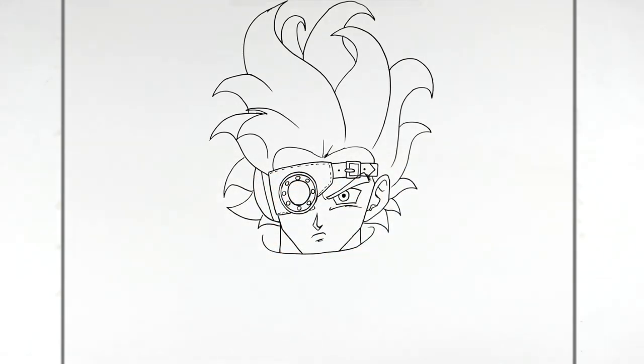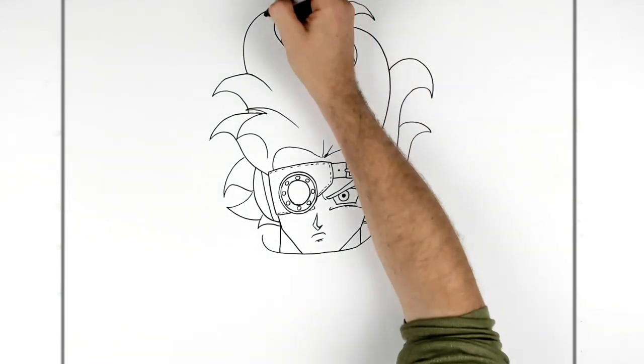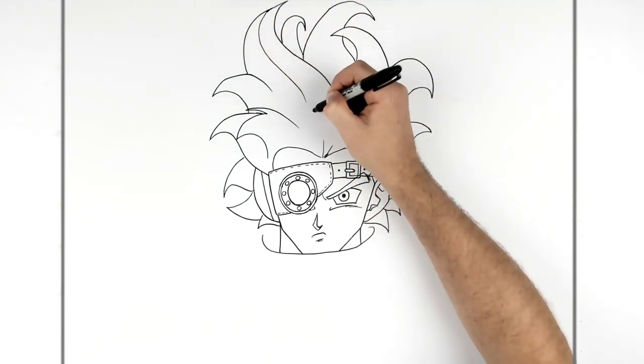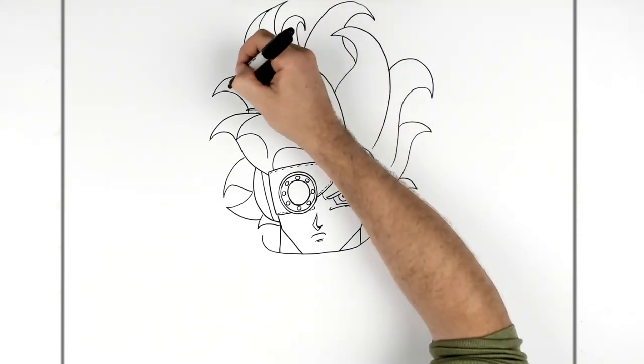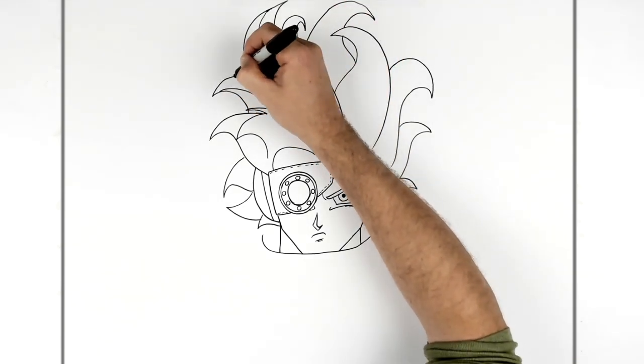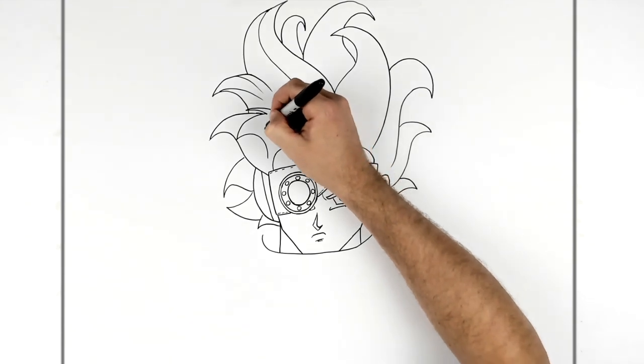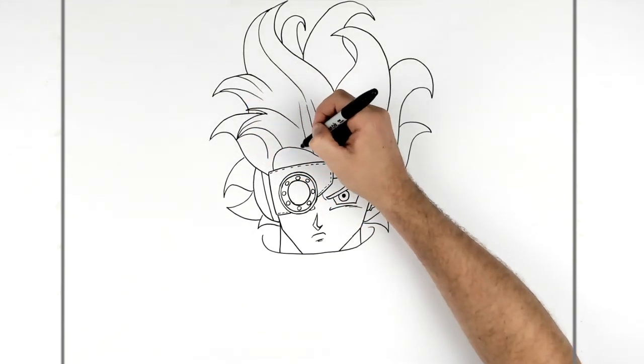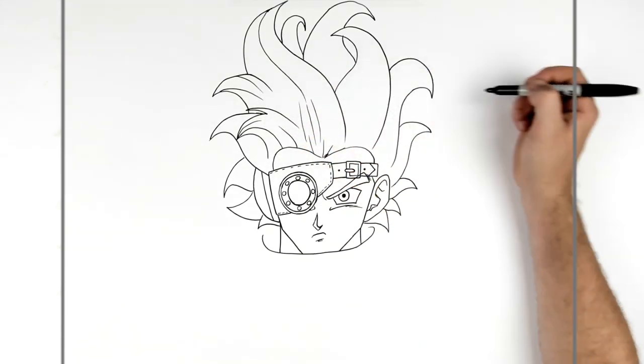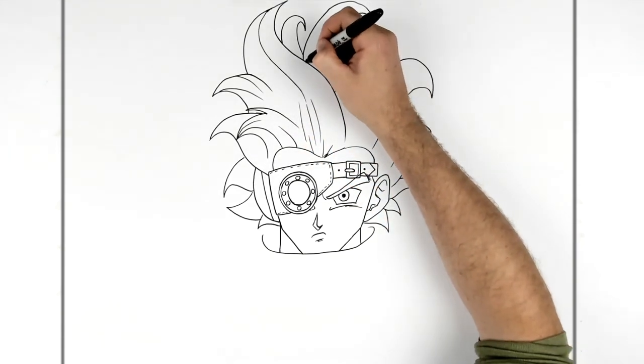All right, so now you just have to add the texture all over. So each of these you just sort of follow sort of the shape for each spike and textures coming off. Similar to the Saiyan hair, just more sort of curved. You can do that as much as you want.